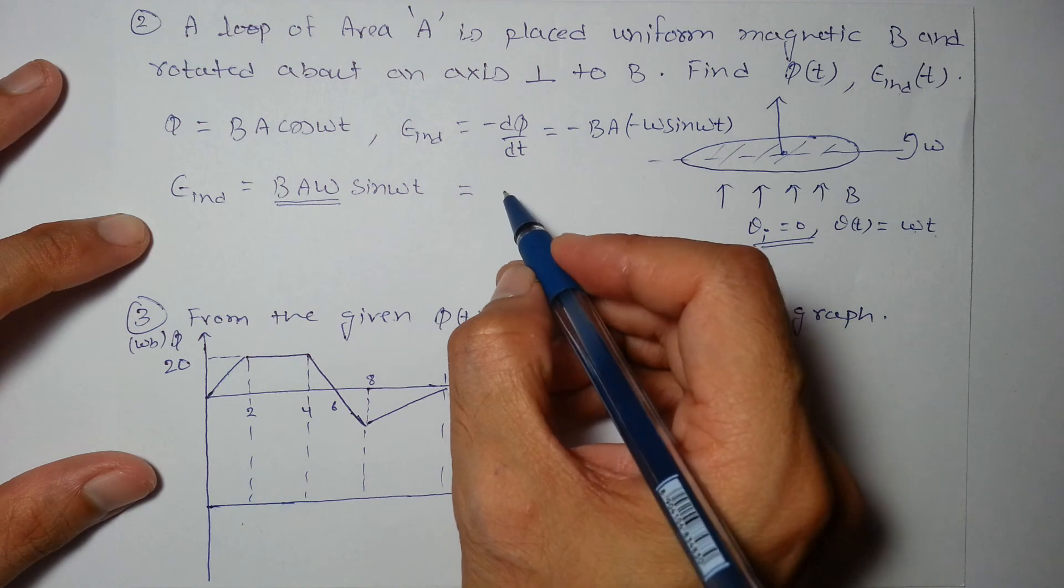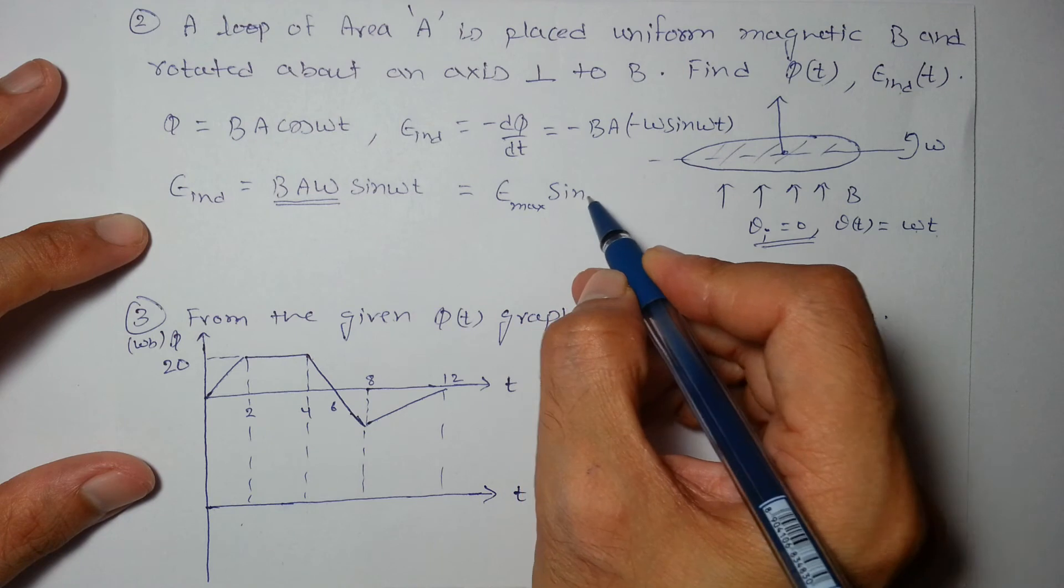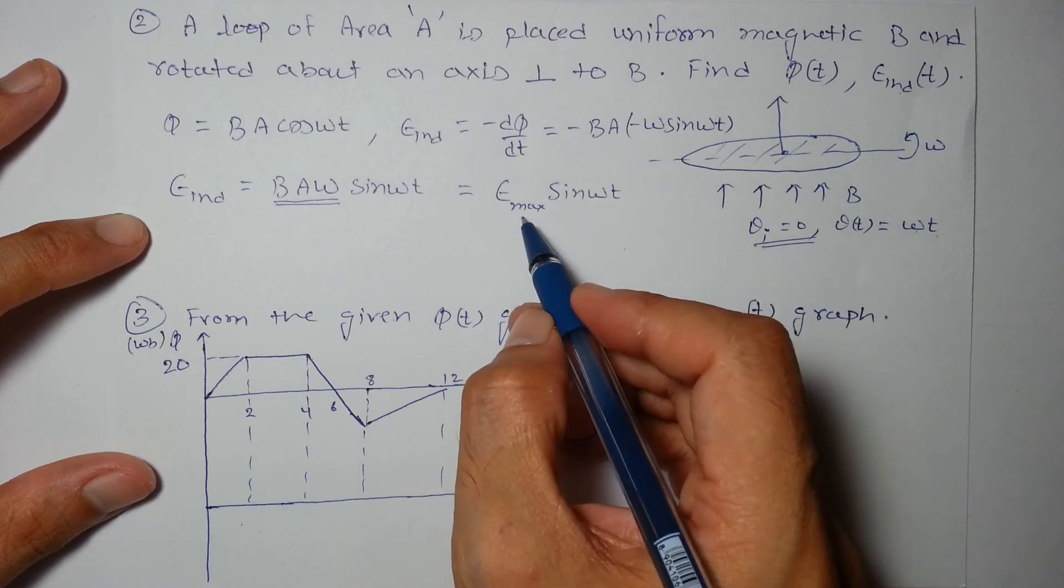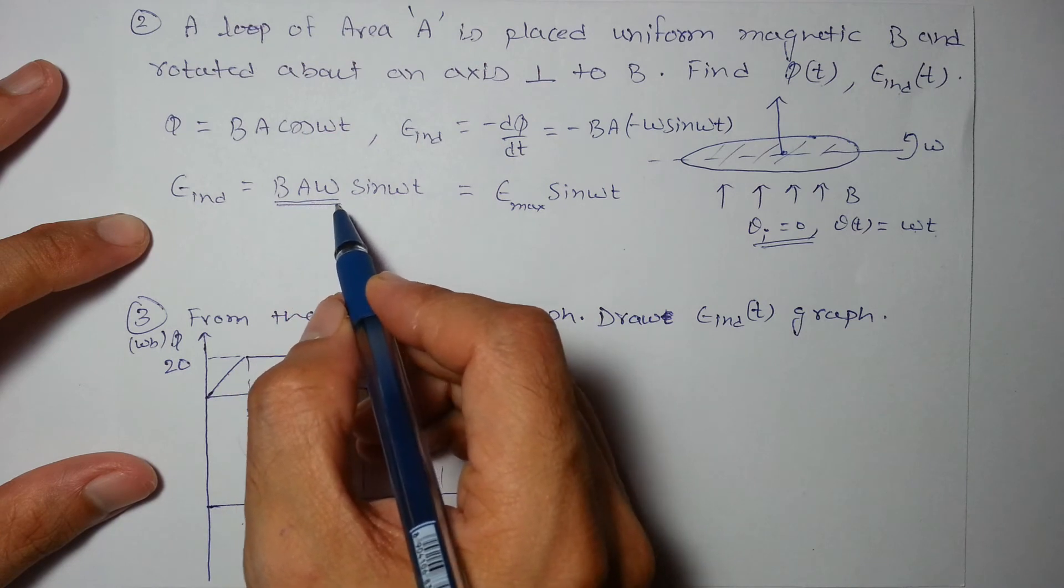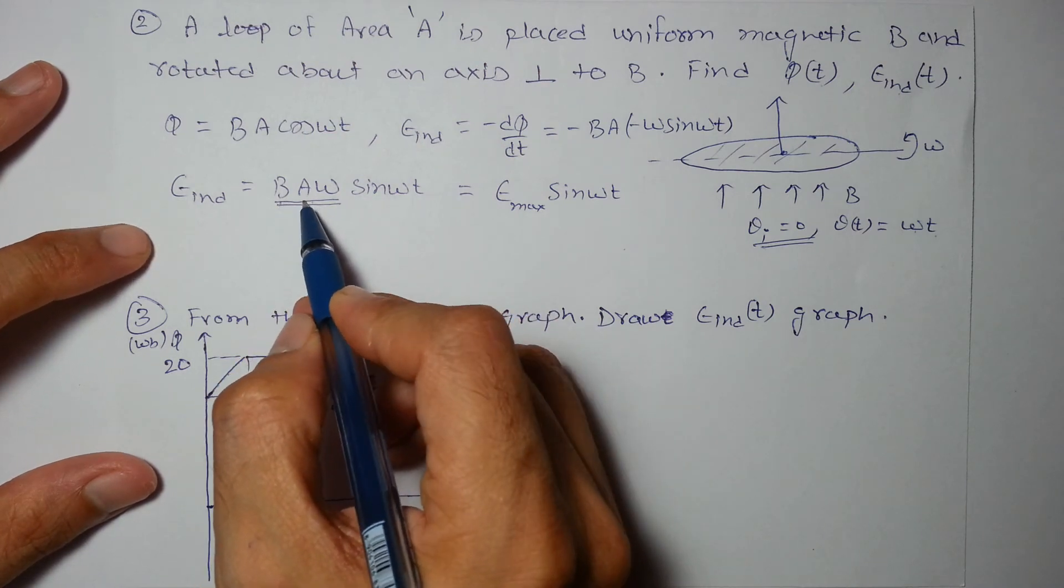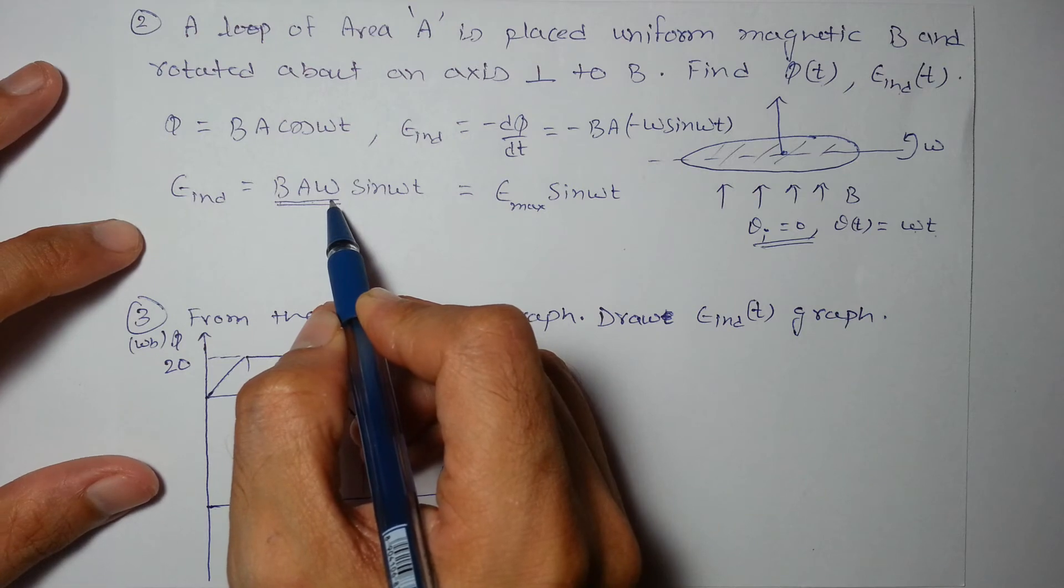So if someone writes EMF_induced_max × sin(ωt), this is the maximum value of the EMF induced, which is BAω: magnetic field, area of the loop, and the frequency, angular frequency or angular velocity of the loop.